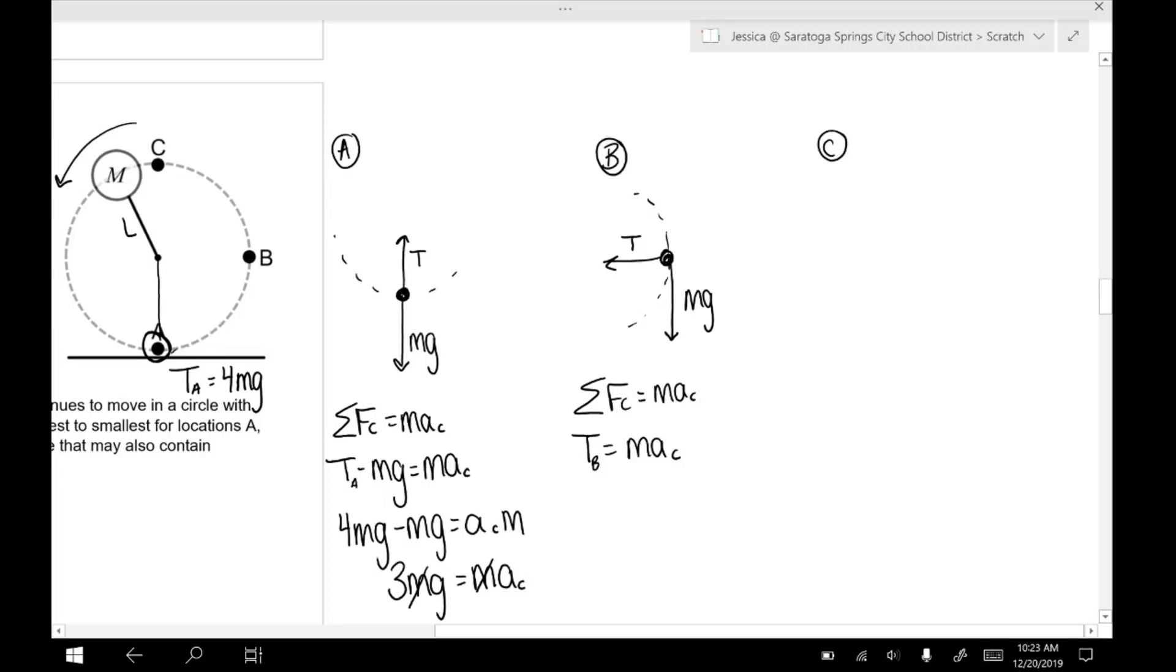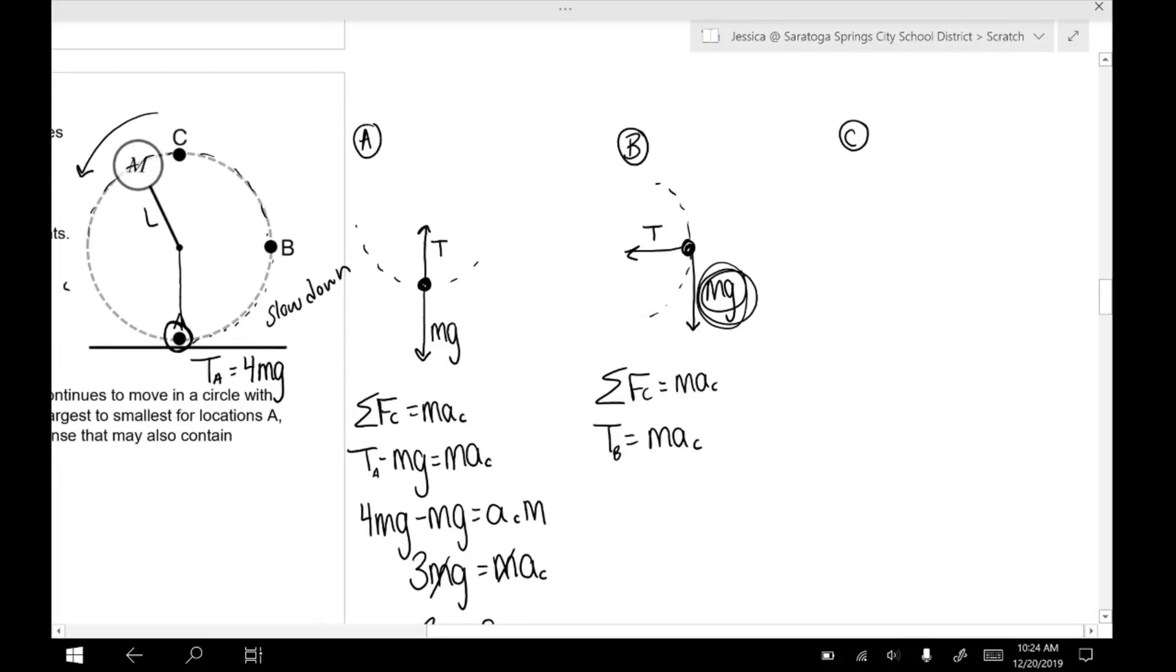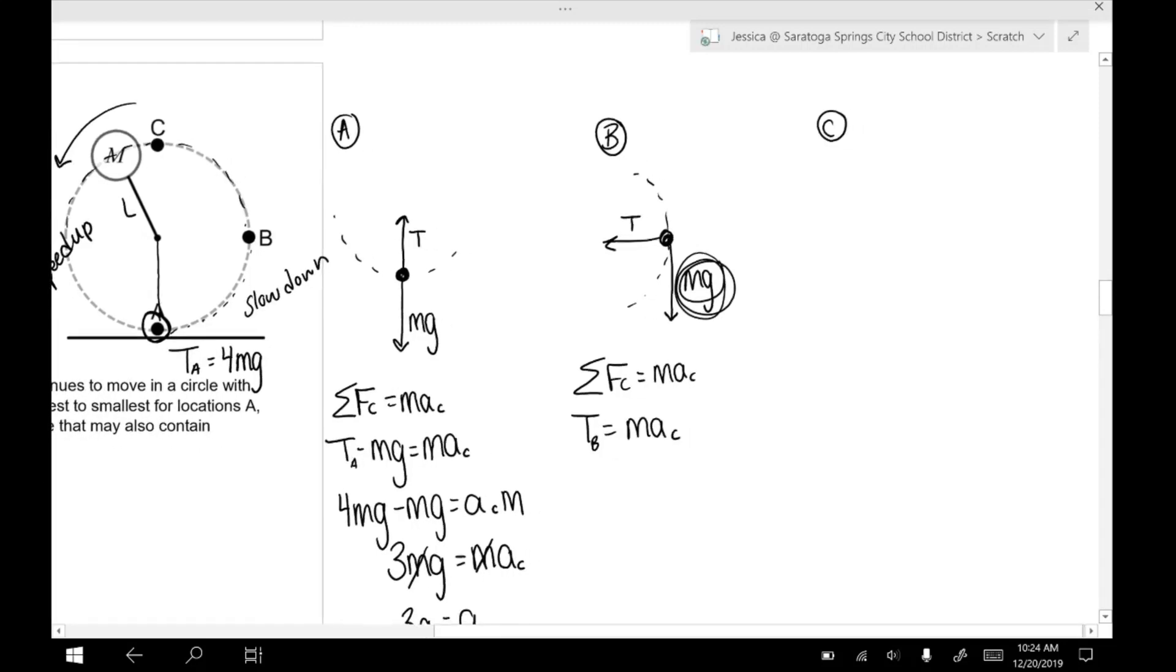This ball is going to slow down as it moves from A to B to C. Okay. Because of this downward force of gravity. Then from C back to A, this ball is going to speed back up. Okay. So that'll give you some hint as far as ranking the tensions TA, TB, TC.